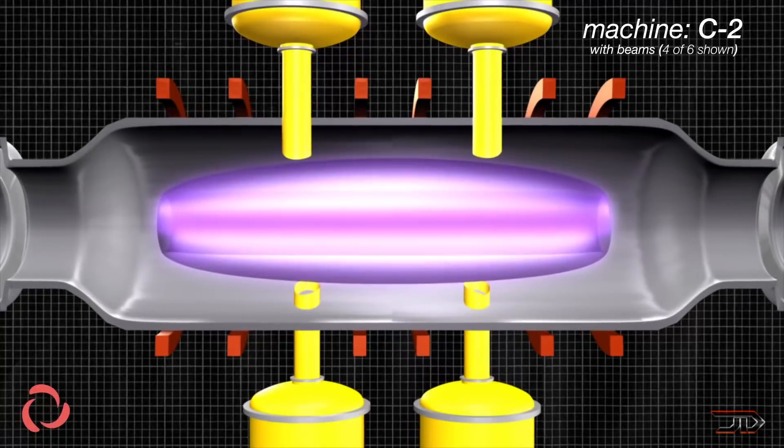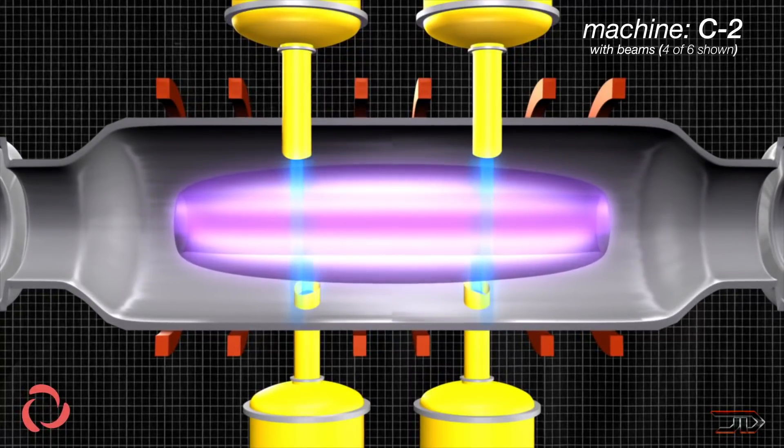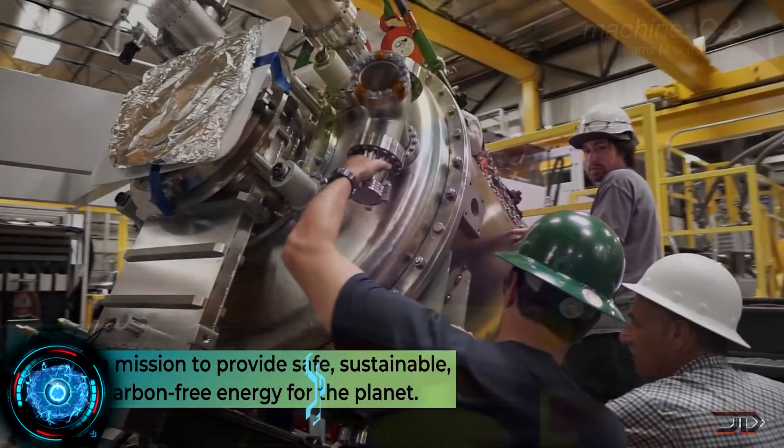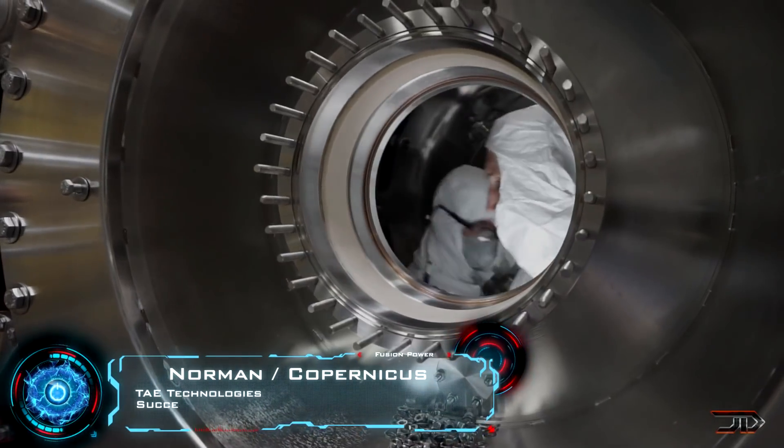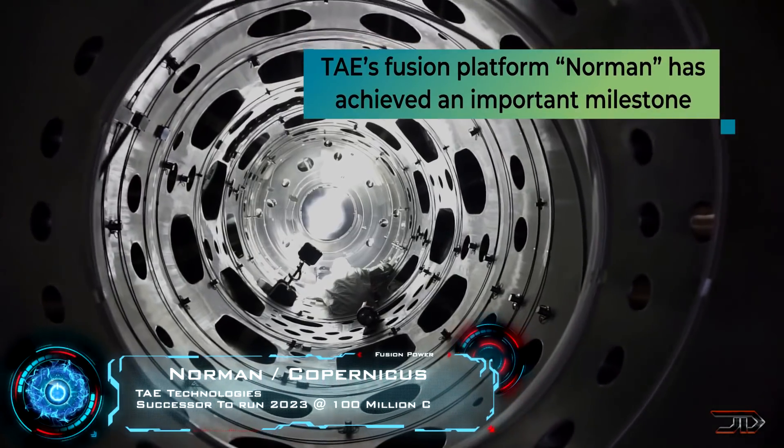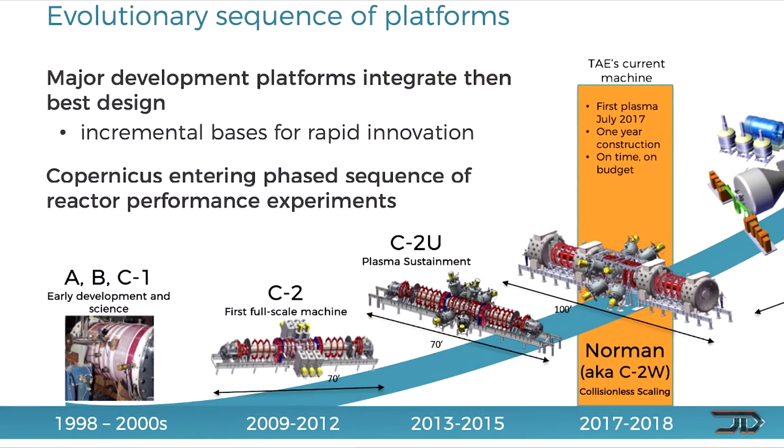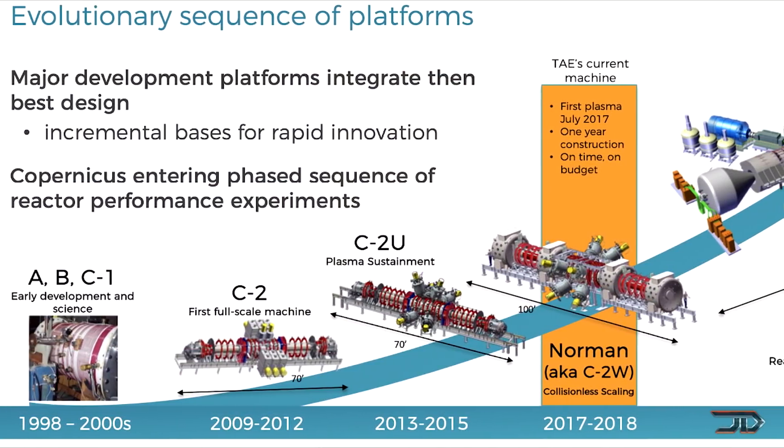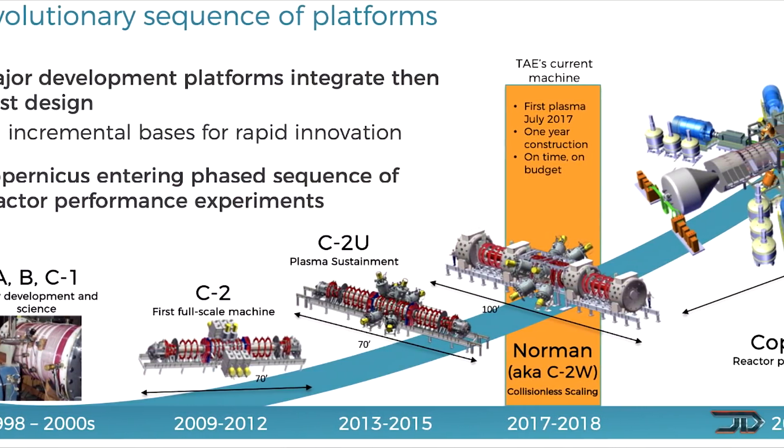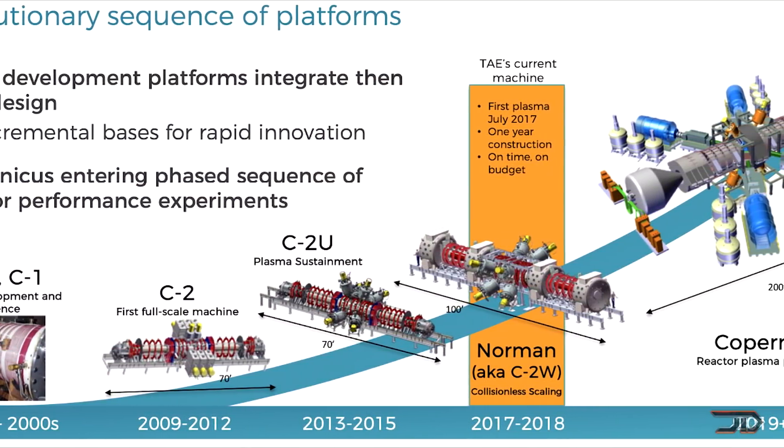There are two notable companies which are focusing on reversed field configuration. TAE Technologies has already come out with their fifth generation platform, and it currently produces around 650 experiments a month. Most importantly their next unit will be designed to operate at the 100 million degree mark for net energy production.